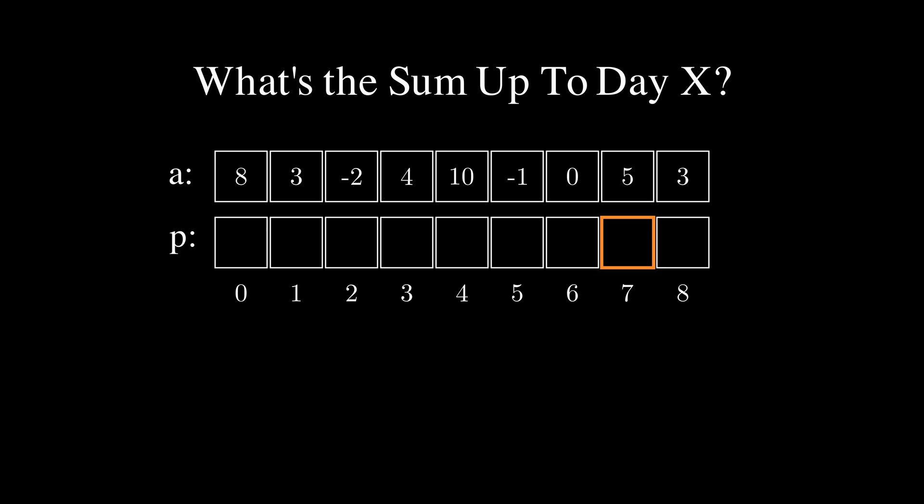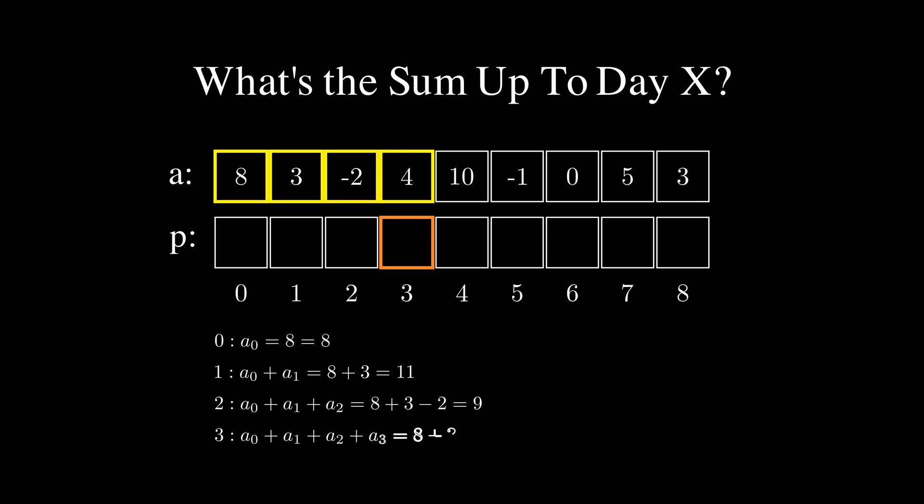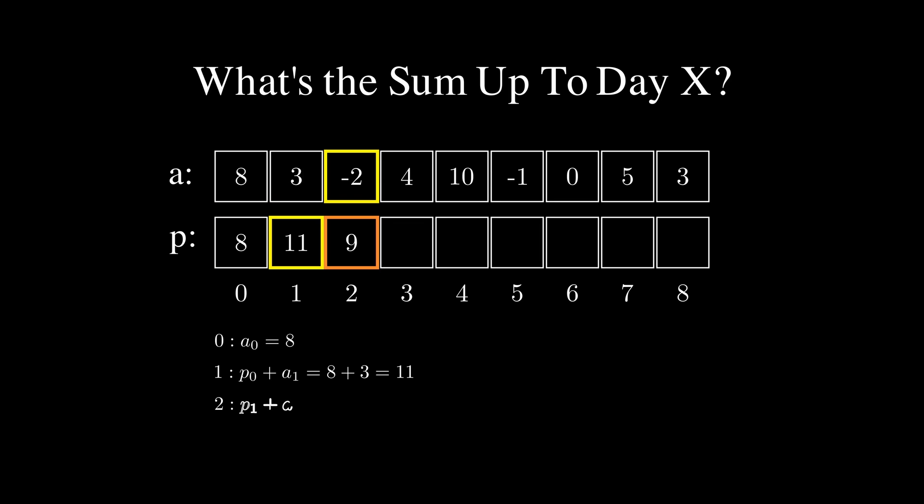So let's calculate the array p. The first element of p is equal to the first element of the given array. The second is the sum of the first two elements. The third is the sum of the first three and so on up until the last element of the array. Did you notice the pattern? To calculate the next element in the prefix sum array we repeat all the actions in the previous one and then add only one more element from the initial array. Well, as all the actions are already stored in the previous element of the prefix sum array, we can just reuse it.